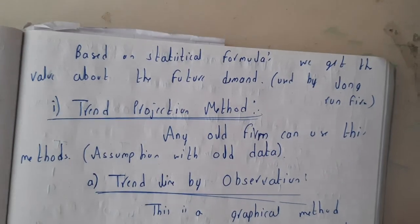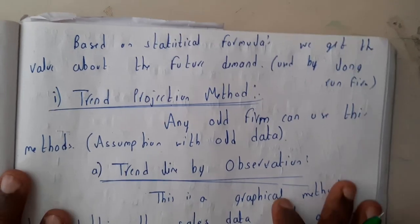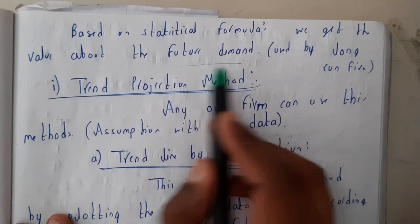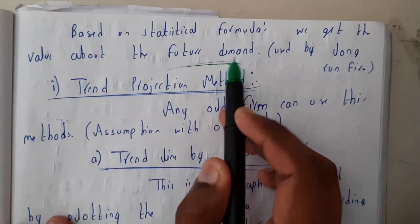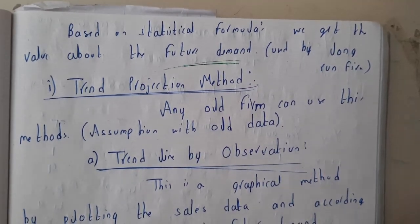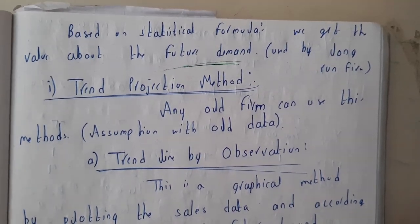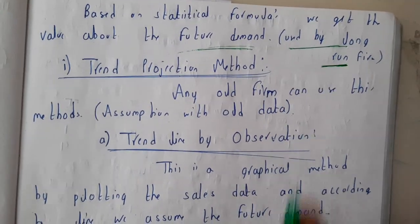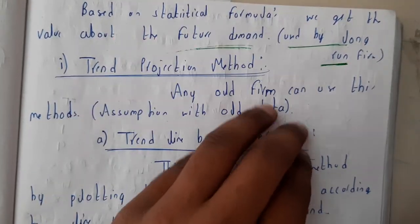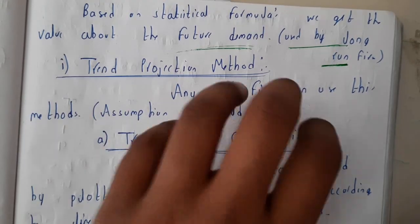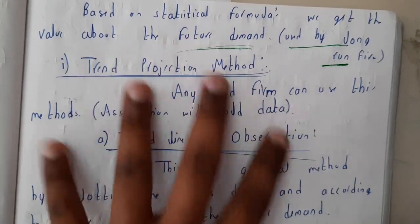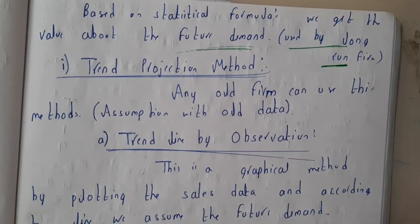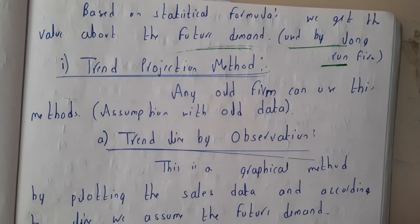Based on statistics, by using some formulas we get various values about the future — like future estimations or earnings. These methods are used only for long-term businesses, because all these methods need past inputs. For example, what was the income in the last six months, one year, or one decade.